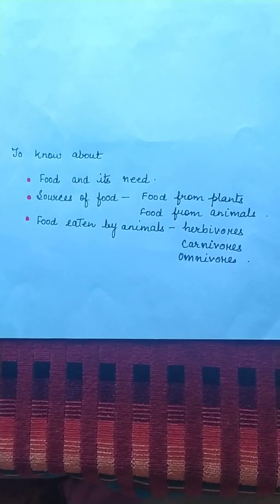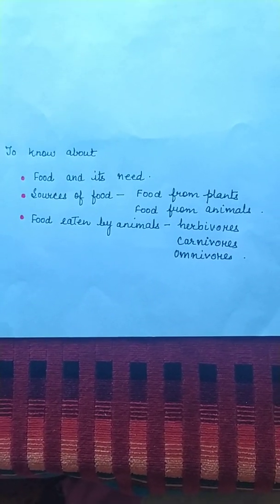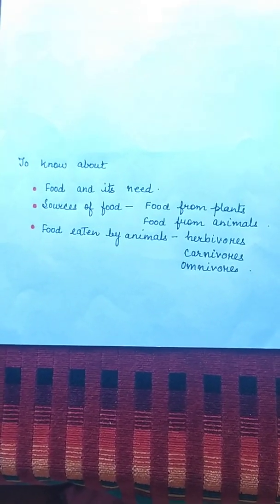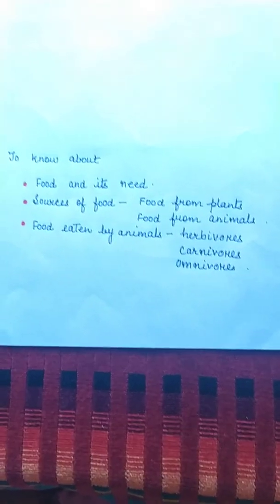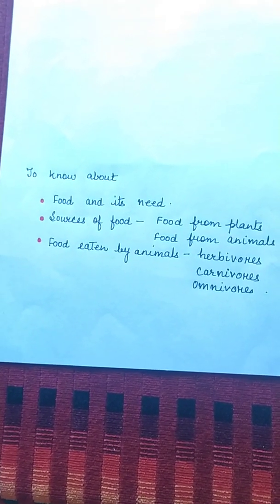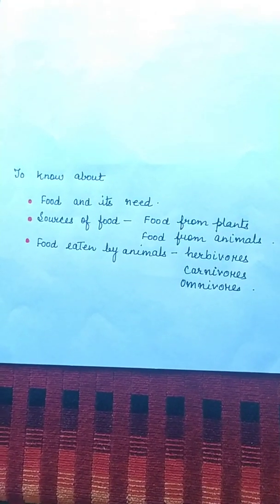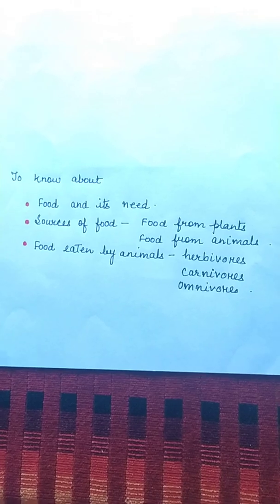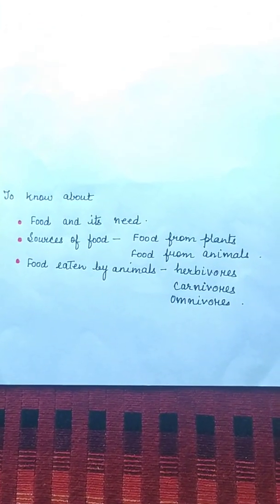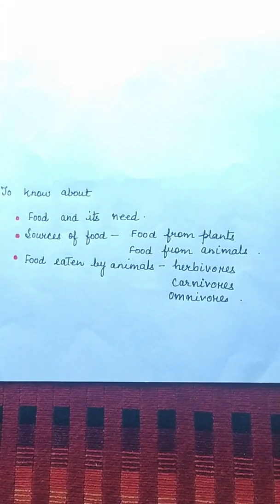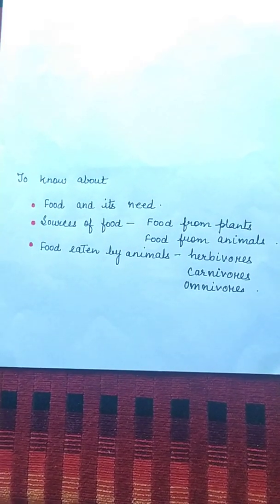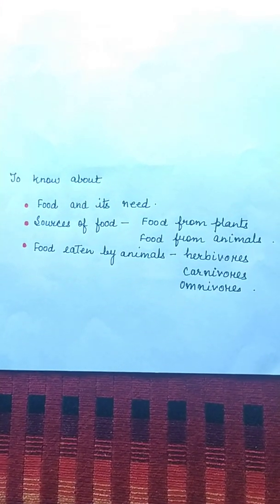Hello and welcome students. Today we will begin with the second chapter, Food, of Science Class 6. In this video we will discuss about food and its needs, sources of food, food from plants, food from animals, food eaten by animals, herbivores, carnivores and omnivores.